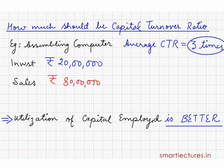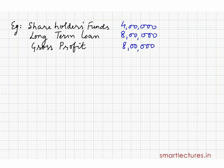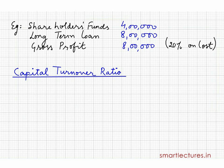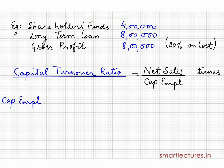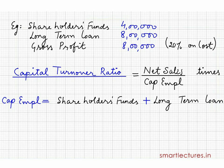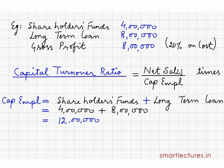Suppose in a company: shareholder funds are 4 lakhs, long-term loans 8 lakhs, gross profit is 8 lakhs, and gross profit is 20% on cost. Calculate capital turnover ratio. The formula is net sales upon capital employed. Capital employed equals shareholder funds plus long-term loans — that is 4 lakhs plus 8 lakhs — so capital employed is 12 lakh rupees. But we don't have net sales directly from this question, so we need to calculate it.